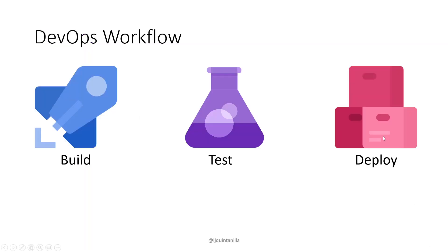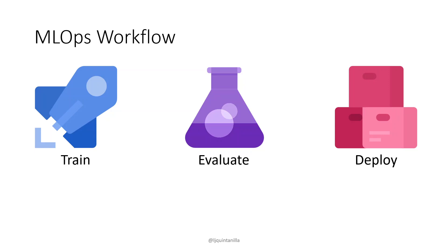At a high level, the DevOps workflow has a build step where you're making commits or checking code into version control. You build your application, then you test it to make sure it works as expected before shipping to customers. Once testing passes, you deploy. From an MLOps standpoint, you're either getting new data or making changes to the code that trains your machine learning model — that's your train step, which is equivalent to the build step in the DevOps workflow.